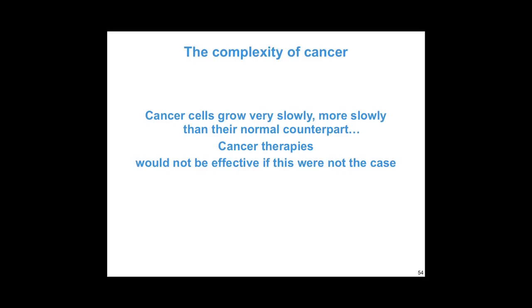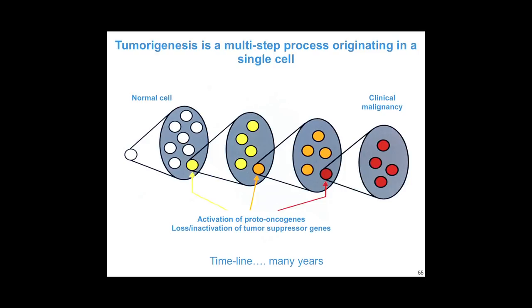In summary: a normal cell acquires some sort of change in its genes, resulting in the yellow cell which expands, then acquires additional changes to give rise to the orange and the red and so on. This typically takes many, many years. For breast cancer or colon cancer — the common adult cancers — this probably takes typically 20 or 30 years. The reason we see the disease more common in people in their 80s than their 50s is because they've simply had more time for these genetic changes to reveal themselves and the cancer to become evident.